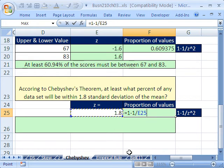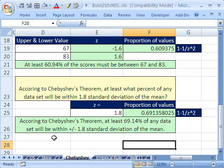So we say equals 1 minus 1 divided by, and we have our z, or number of standard deviations above or below the mean, shift 6 for caret, exponent 2. So we're squaring that. And then we can say, according to Chebyshev's theorem, I wish I could pronounce that, at least 69.14% of the data of any data set will be within plus or minus 1.8 standard deviations of the mean. Now, when we come back in our next video, we'll talk about the empirical rule. All right, see you next video.